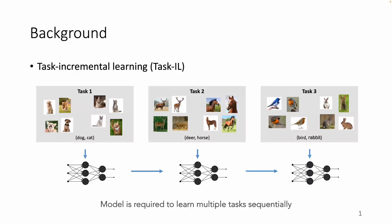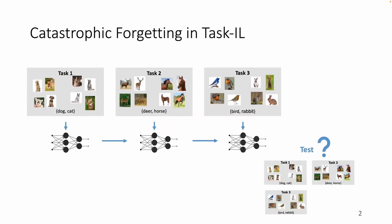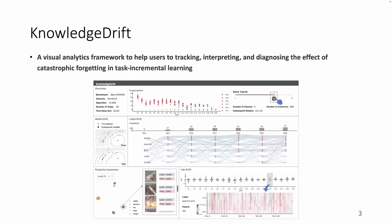In task incremental learning, the model is trained on multiple tasks in a sequential manner, with the goal of retaining knowledge learned from the previous task. However, the model is prone to using all its capacity for the current task and forgetting what it has learned in the past. To address the challenges in analyzing the forgetting problem, we propose the knowledge strip to help users in tracking, interpreting, and diagnosing the catastrophic forgetting in task incremental learning.